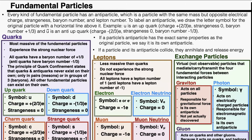To label an antiparticle, we draw the symbol for the original particle with a horizontal line above it. For example, the up quark (symbol: u) has a charge of +2/3, strangeness of zero, and baryon number of +1/3. The anti-up quark therefore has a charge of −2/3e, strangeness of zero, and baryon number of −1/3. If a particle's antiparticle has identical properties to the original, we say it is its own antiparticle. If a particle and its antiparticle collide, they annihilate and release energy in the form of photons.